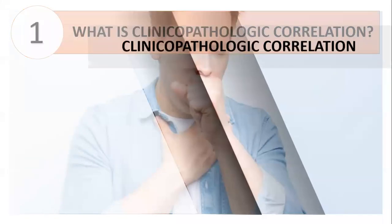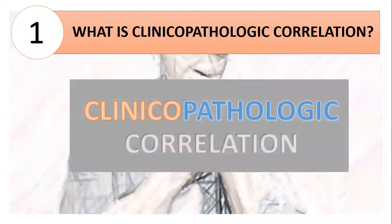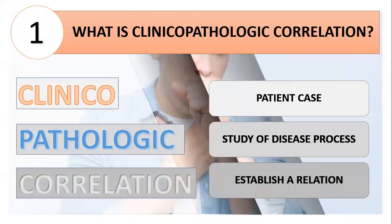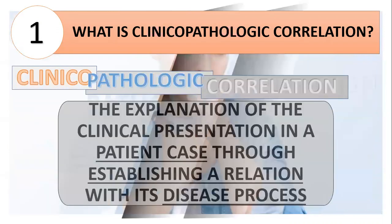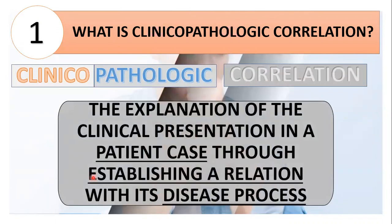So what is a CPC? From the name itself, we may derive its meaning. Clinical means dealing with a patient case. And then pathologic is the study of the disease process. And correlation is the attempt to establish a relation. So a clinical pathologic correlation is the explanation of the clinical presentation in a patient case through establishing a relation with its disease process.